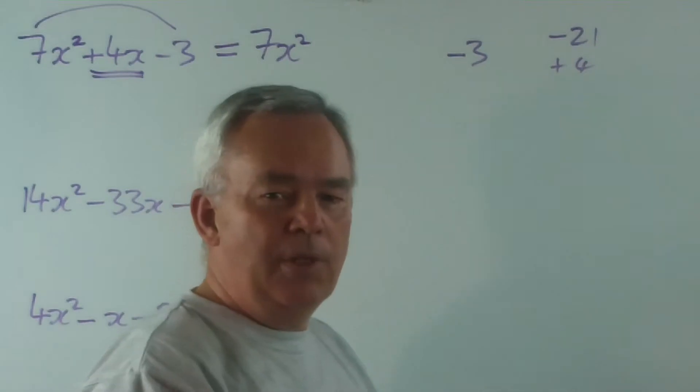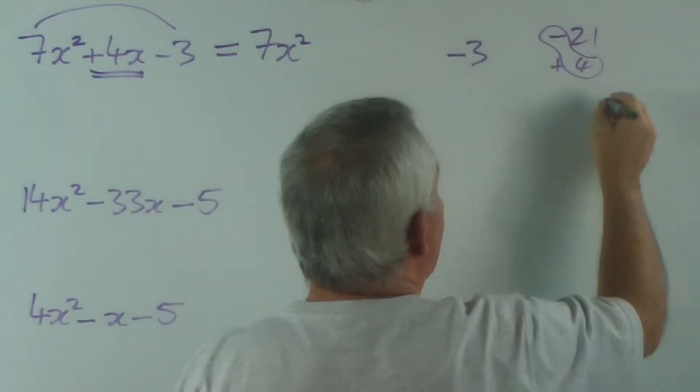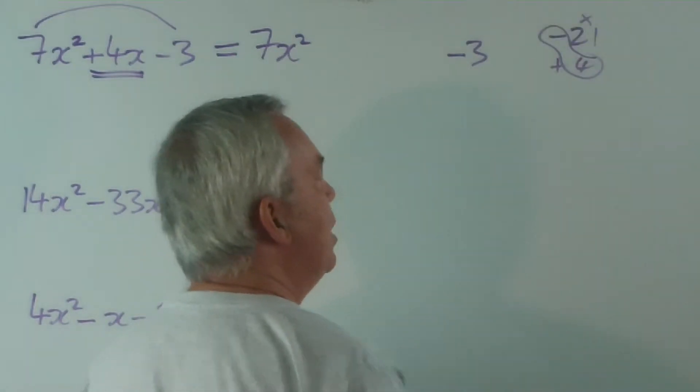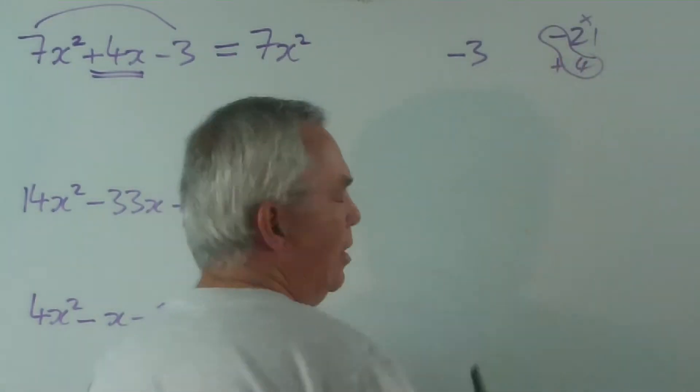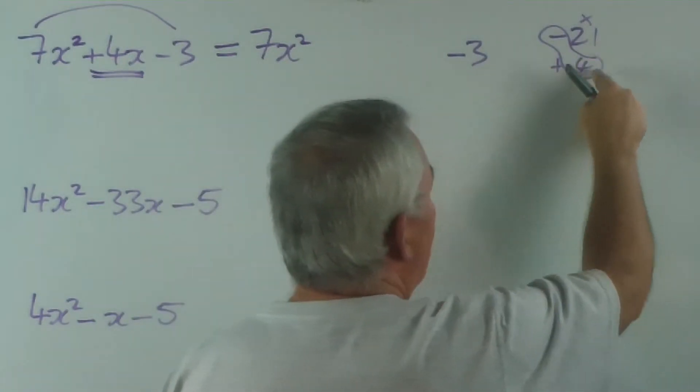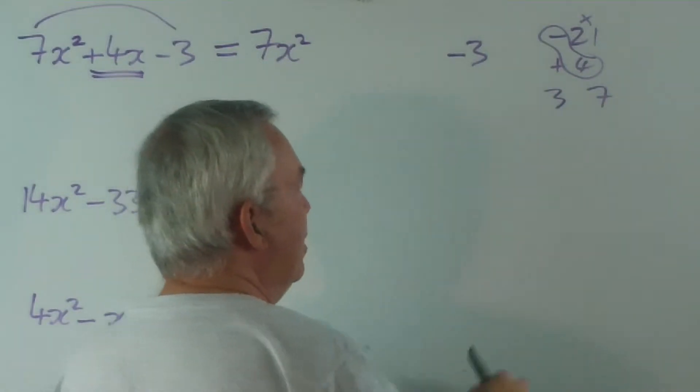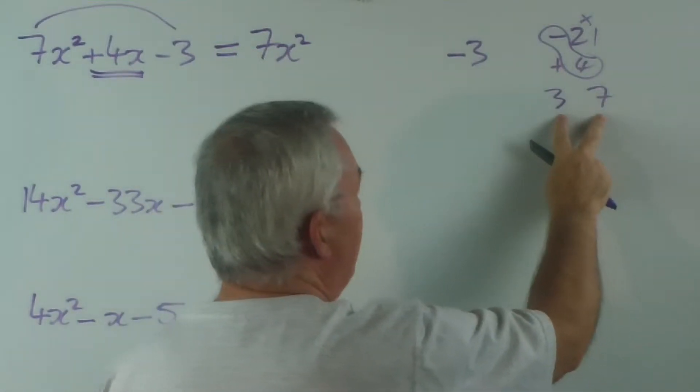If you've watched my previous video, we analyse it this way. We put a loop here and we say what numbers multiply to make 21 and are 4 apart, or have a difference of 4. Multiply to make 21 and are 4 apart. It has to be 3 and 7. You can see there's only a gap of 4 between them.